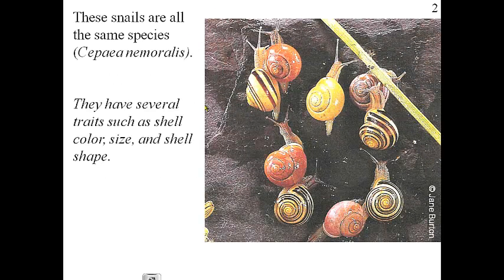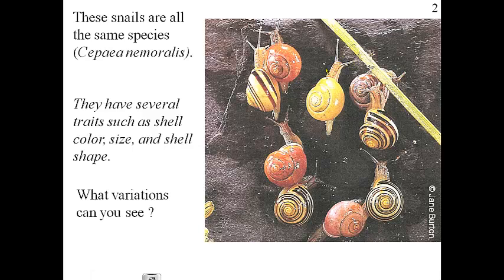These snails are all the same species, which means they can breed and reproduce and create fertile offspring. They have several different traits within their species — shell color, shell size, the color of their bodies, shell shape, and even the length of their antennae. There are a whole bunch of different traits that these snails have within their species.